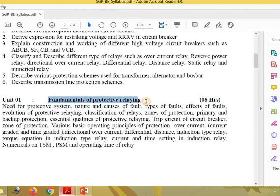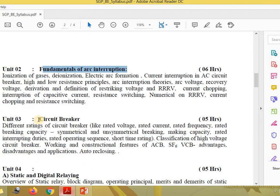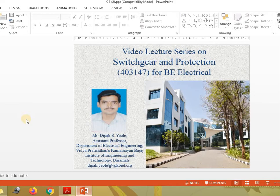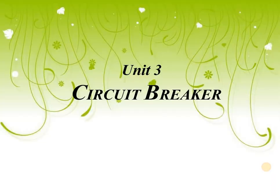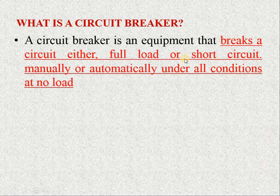In the second unit we have discussed about the fundamentals of arc interruption. In the third unit we are interested in the circuit breaker. A circuit breaker is an equipment that breaks a circuit either at full load or short circuit, manually or automatically, under all conditions at no load.